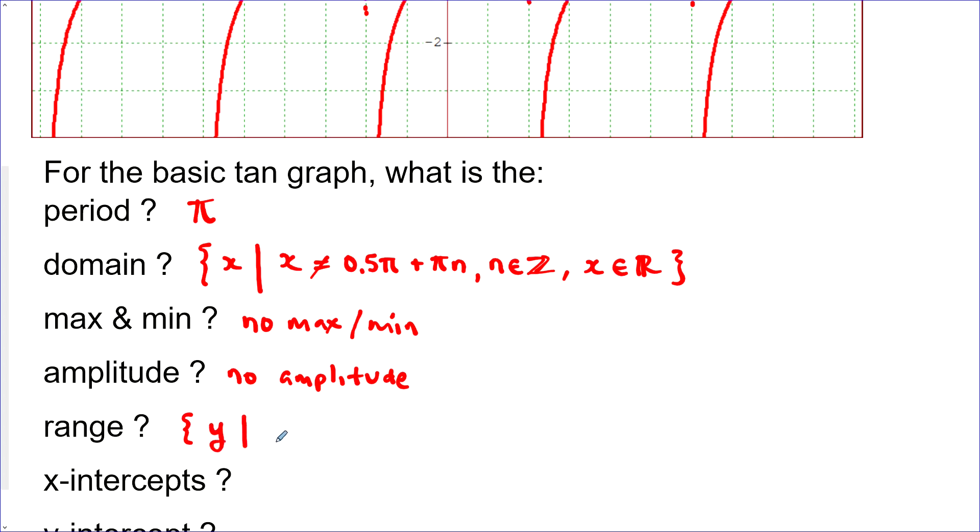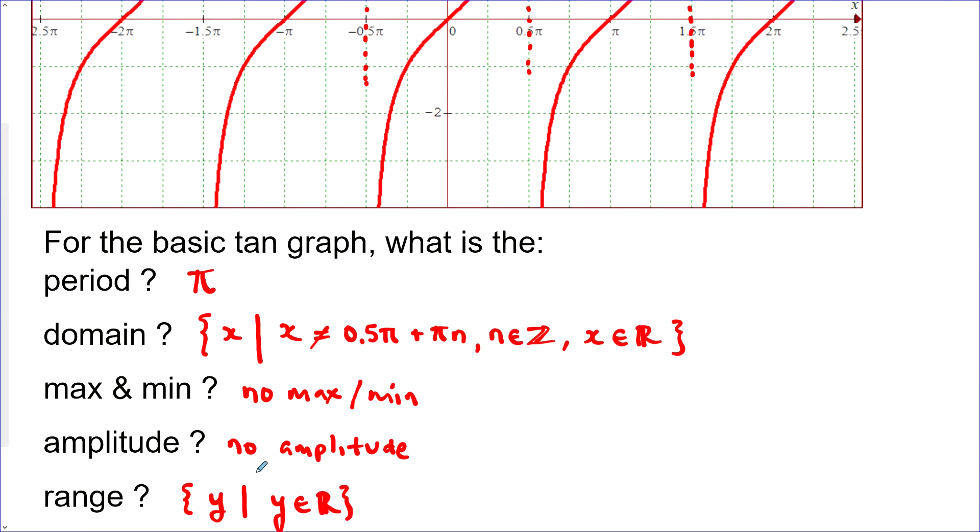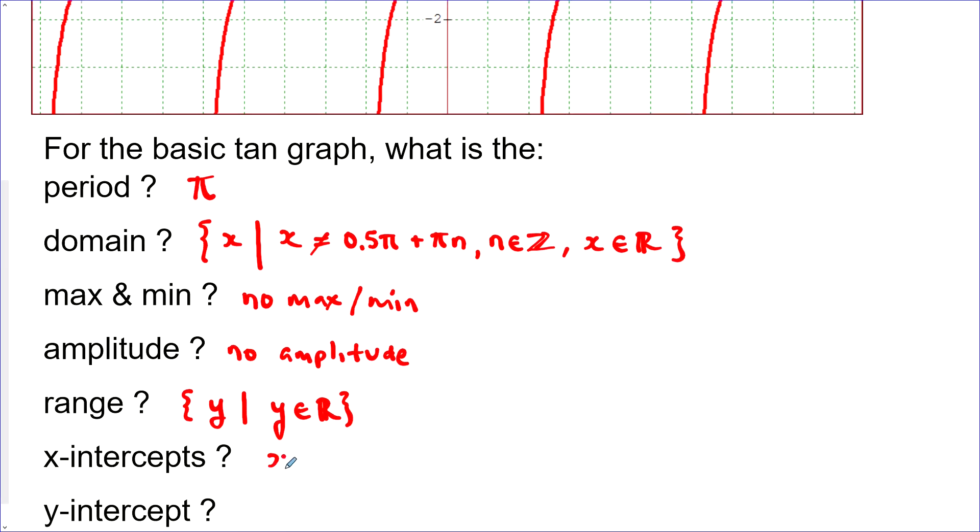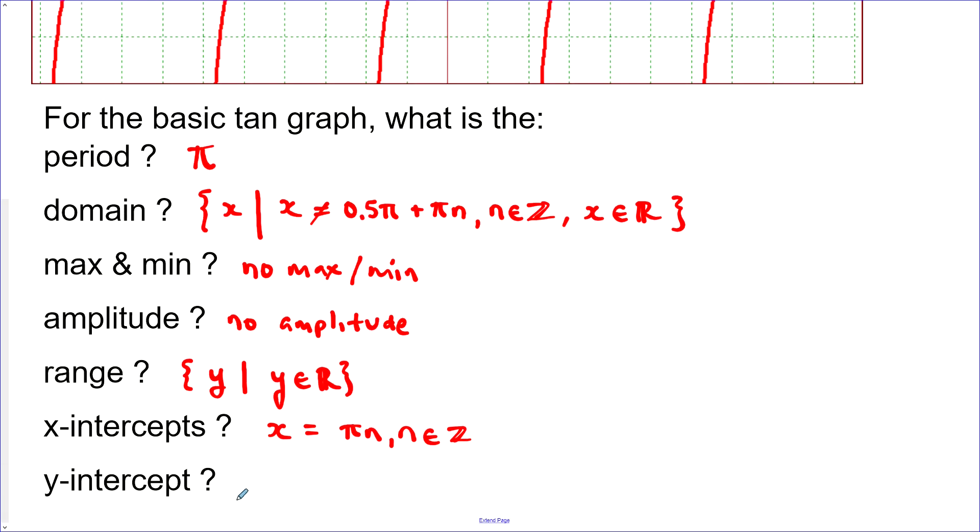x-intercepts. Well, we've got x-intercepts at 0 and pi and 2 pi. So it looks like we could write this in general form: x is equal to pi n where n is an integer. There's all of our x-intercepts. y-intercept. Now that would just happen at the origin.